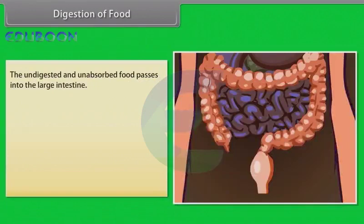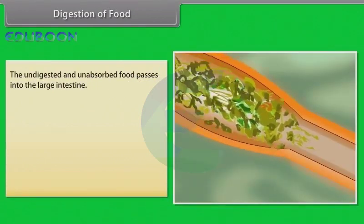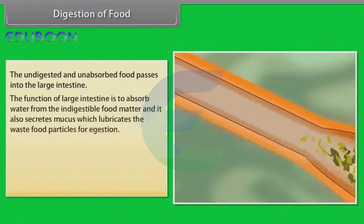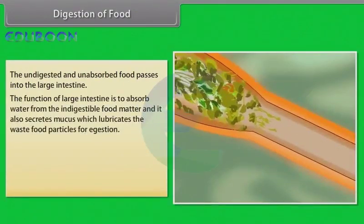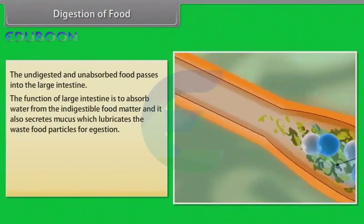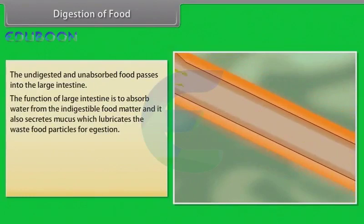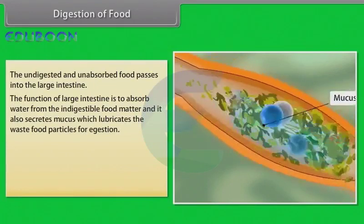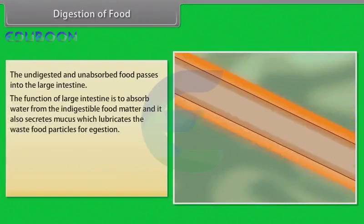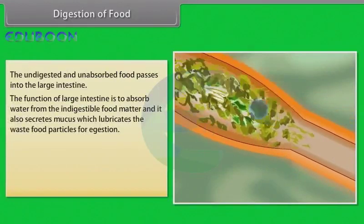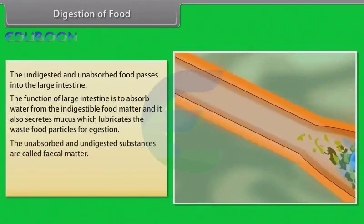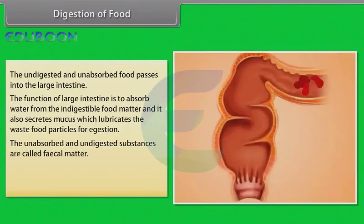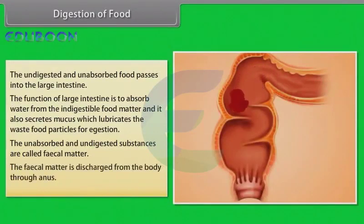The undigested and unabsorbed food passes into the large intestine, whose function is to absorb water from the indigestible food matter. It also secretes mucus to lubricate the waste food particles. The unabsorbed and undigested substances are called fecal matter, which is discharged from the body through the anus.